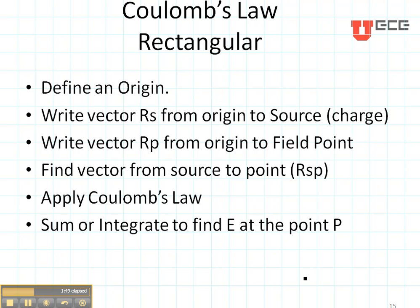You write a vector RP from the origin to the place that you want to find your field point. Then you find a vector from the source to that point — that's the RSP vector. You apply Coulomb's Law and you sum or integrate to find the electric field at that point.